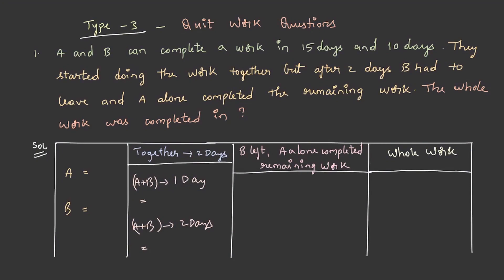What would happen if a person leaves or quits from work after a certain period of time? These are type 3 quitting-from-work questions. A and B can complete a work in 15 days and 10 days respectively. They started doing the work together, but after two days B had to leave and A alone completed the remaining work. Find the total time in which the whole work is completed.